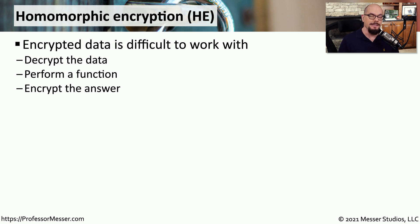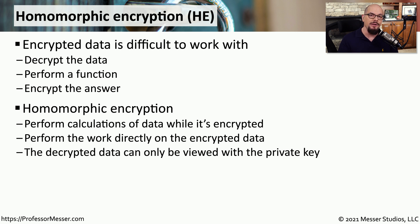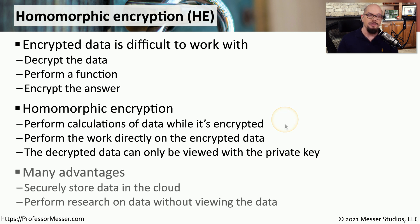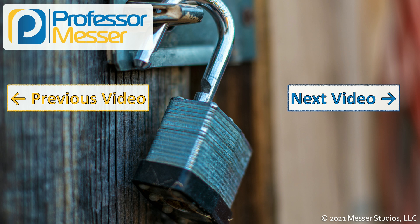Another emerging cryptographic technology is homomorphic encryption, or HE. When you work with encrypted data, it's very difficult to perform some type of action on that data — you would commonly need to decrypt it, perform the function, and then re-encrypt the result. With homomorphic encryption, you perform the calculation while the data remains encrypted. You can perform calculations on data in its encrypted form and save the results as encrypted data, never having decrypted any of that information. This provides a number of advantages, especially if you're storing information in the cloud, allowing people to perform actions on and get research information from the data without ever having access to the original data source.